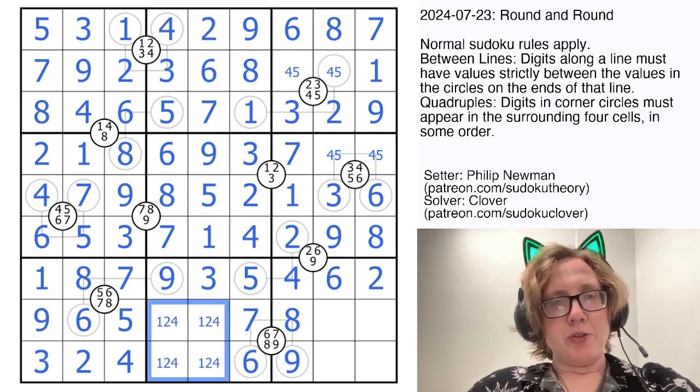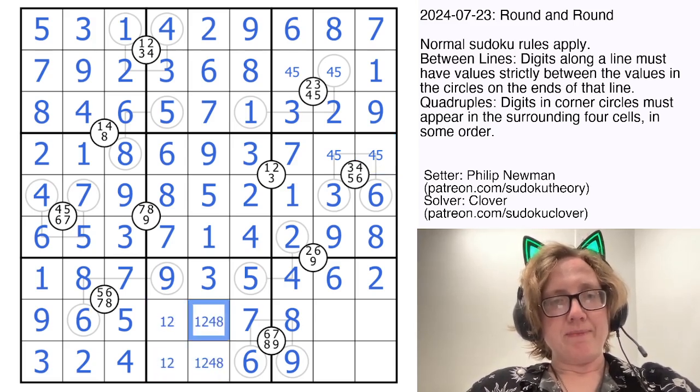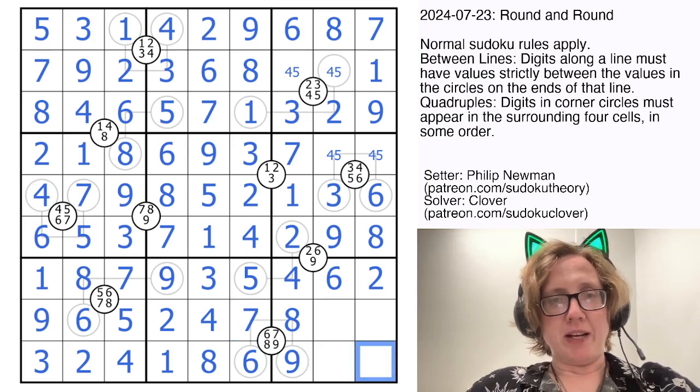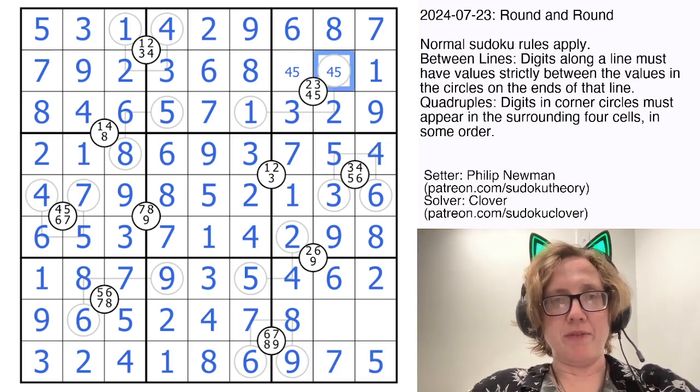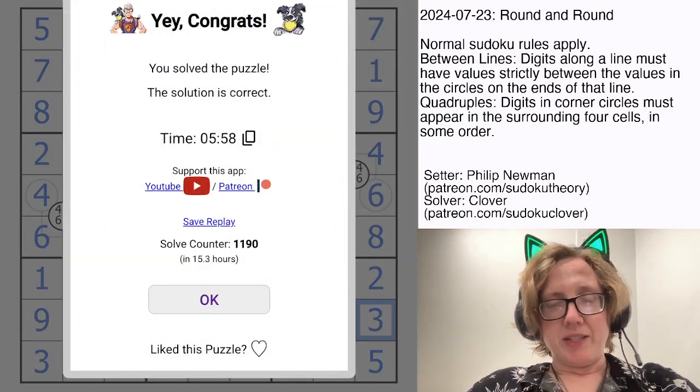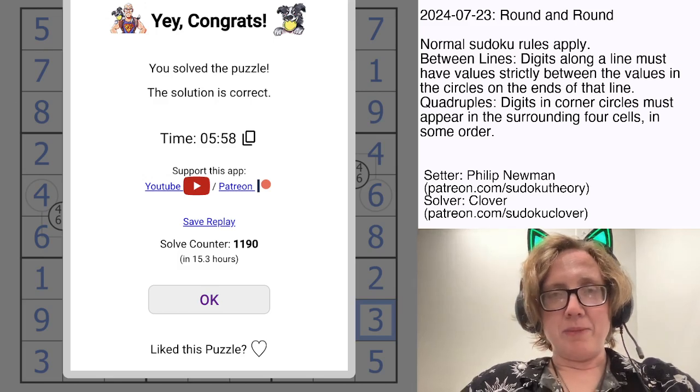In these cells I need 1, 2, 4, and 8. And Sudoku is going to take care of that for us. Now here I need 5 and 7. That resolves this to 4 and 5, 4 and 5. I need a 1 here and a 3 here. And that is how you solve Philip Newman's Around and Around.